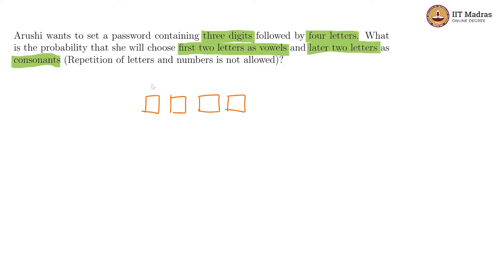Here you want a vowel in the first position, a vowel in the second position, a consonant in the third, and a consonant in the fourth. There is no repetition. So for the first box to get a vowel, the probability would be 5 by 26.